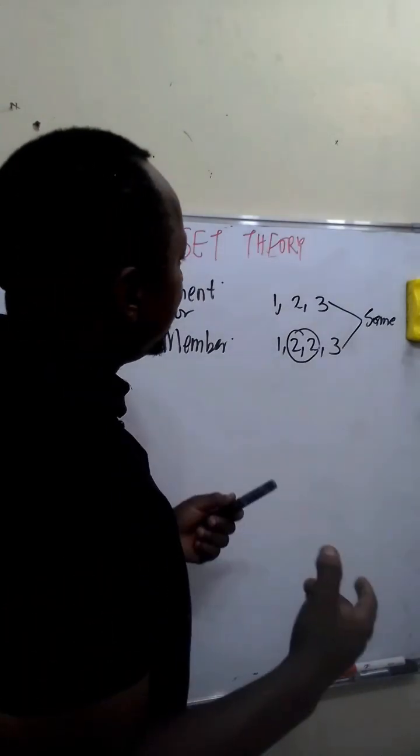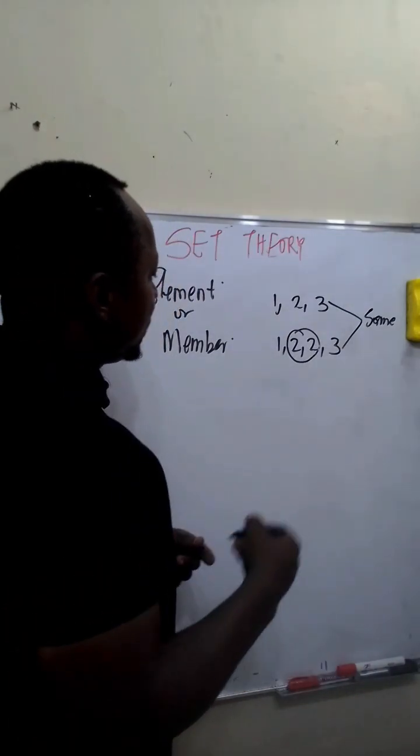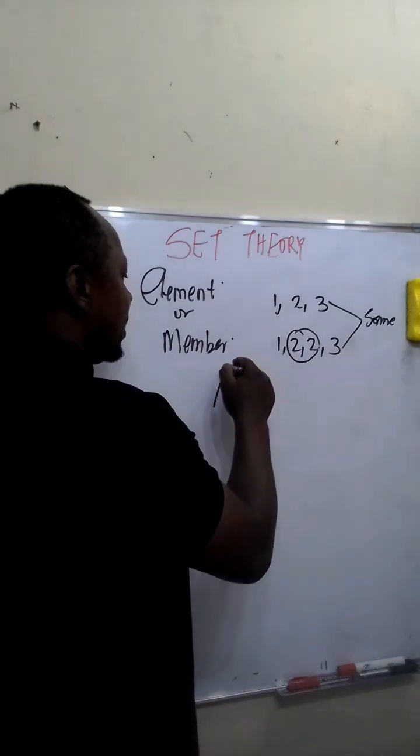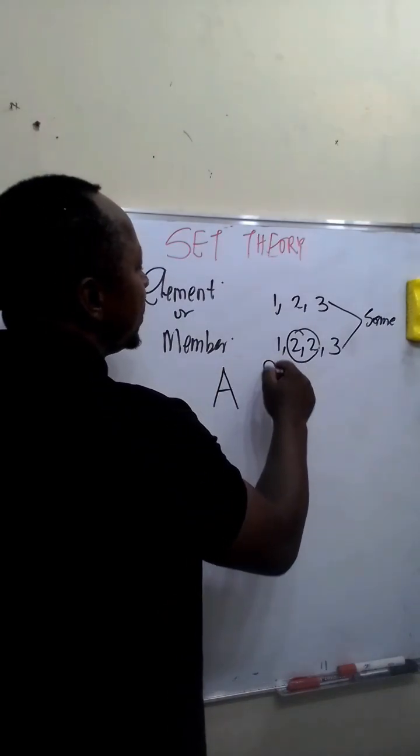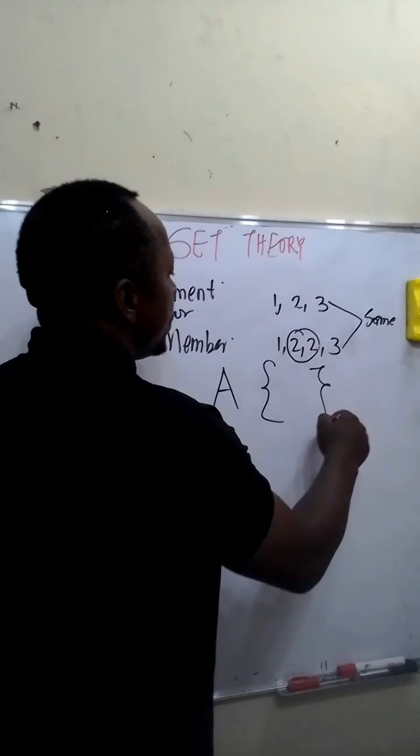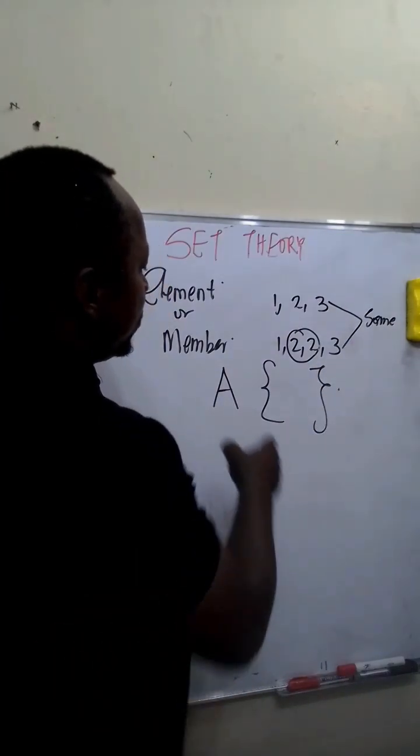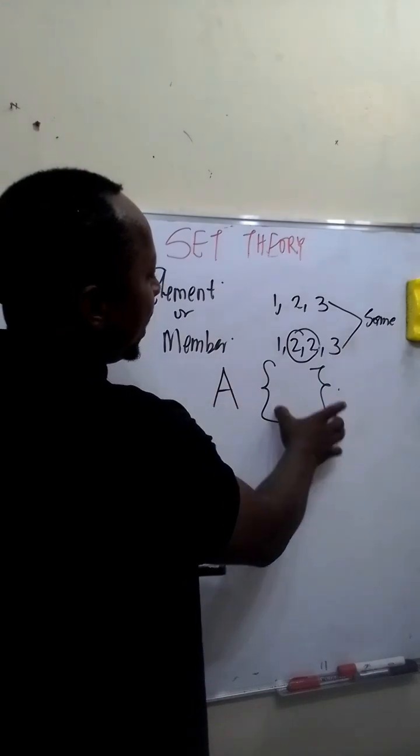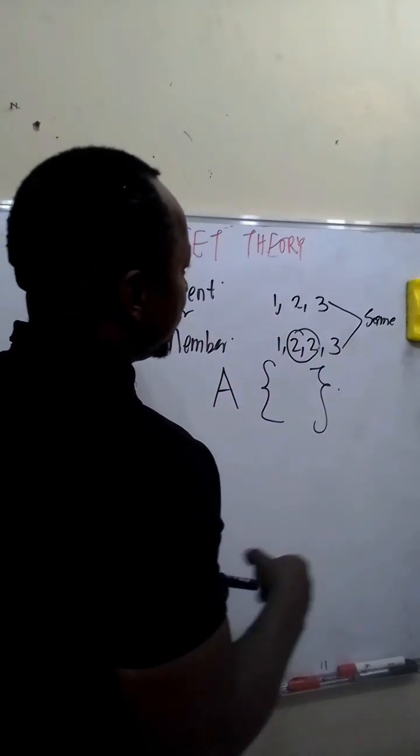Now, sets can be represented or denoted with a capital letter, let's say A, and a curly bracket. We use a capital letter to denote sets and a curly bracket.